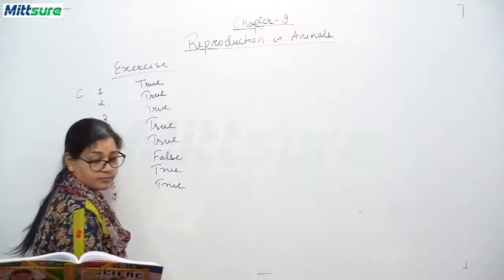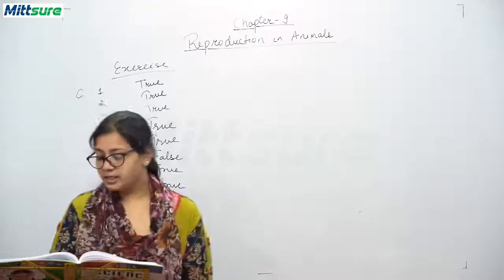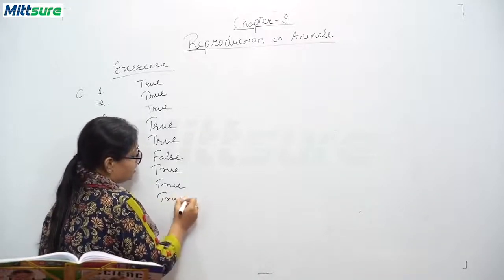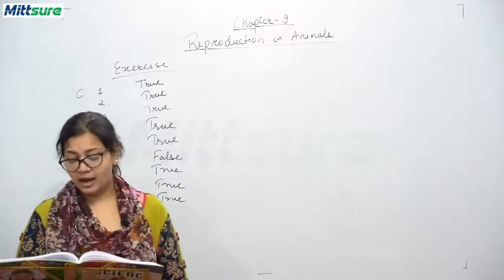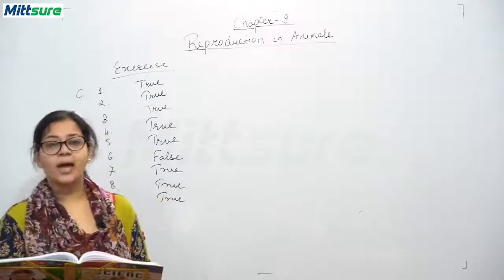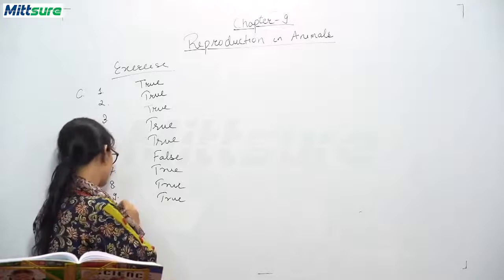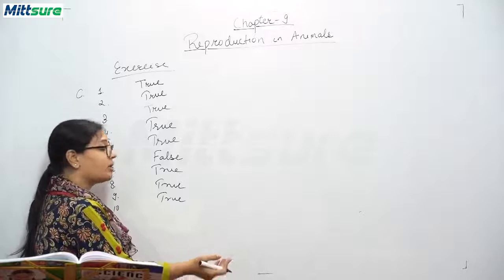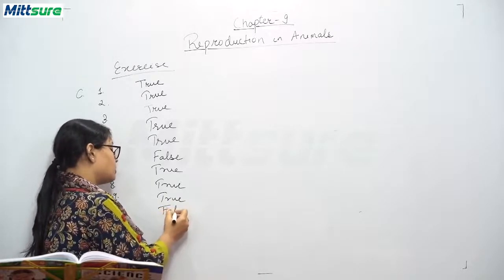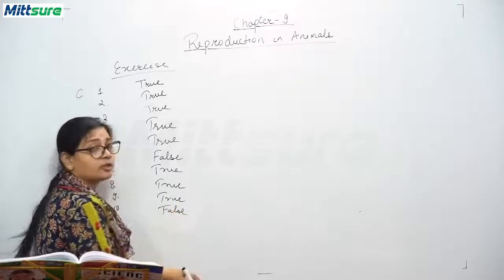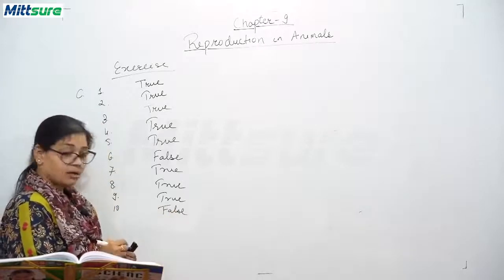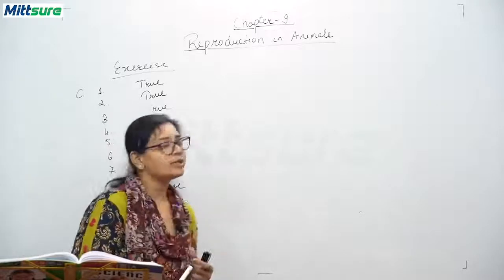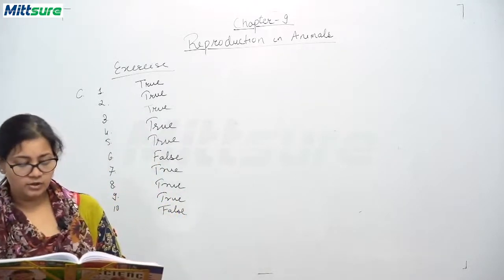Ninth: budding is a method of asexual reproduction. It is also true, and it occurs in hydra. Tenth: hydra reproduces by binary fission. That is false, because hydra reproduces by budding, not by binary fission. Please note down these true and false answers.